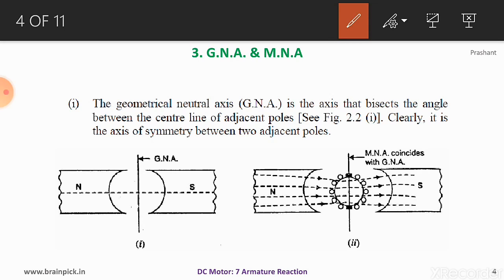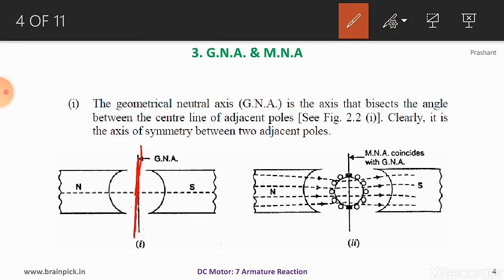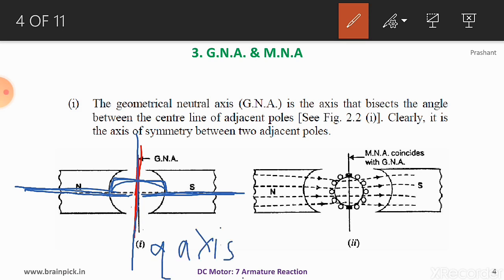Third point: geometric neutral axis and magnetic neutral axis. The geometrical neutral axis (GNA) is the axis that bisects the angle between the center line of adjacent poles — it is the axis of symmetry between two adjacent poles. GNA is the line which bisects the angle between the center line of adjacent poles. It is also called the Q axis, that is the quadrature axis.